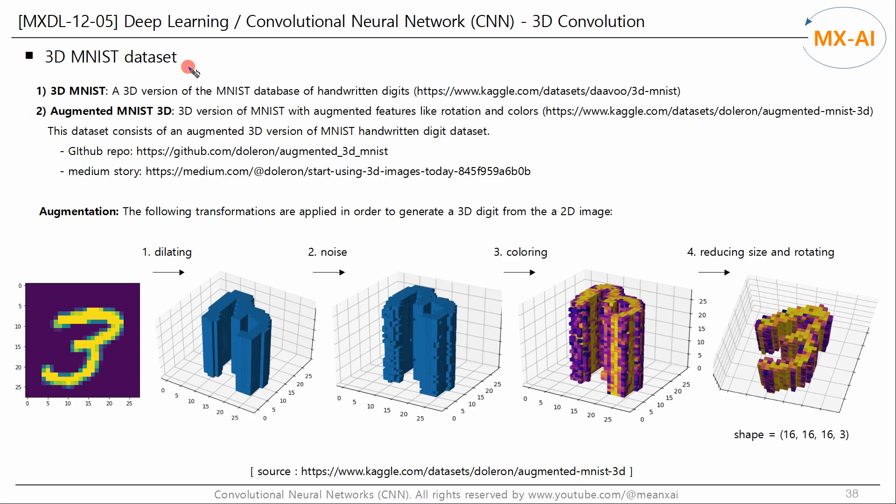Next, let's take a look at the 3D MNIST dataset. This is a 3D version of the MNIST database of handwritten digits. This dataset is available for download from this site. The aim of this dataset is to provide a simple way to get started with 3D computer vision problems, such as 3D shape recognition.